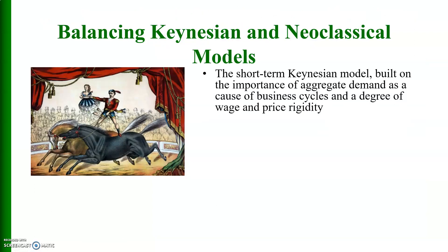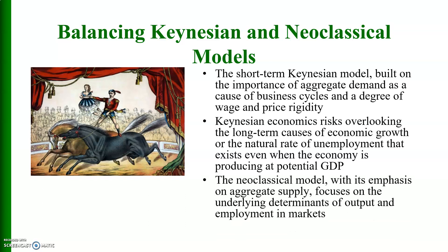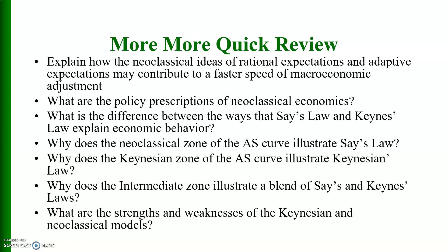Balancing Keynesian and new classical models: The short-term Keynesian model, built on the importance of aggregate demand, explains business cycles and wage and price rigidity, but risks overlooking the long-term causes of economic growth and the natural rate of unemployment that exists even when the economy is at potential GDP. The new classical model, with its emphasis on aggregate supply, focuses on the underlying determinants of output and employment in the market. There are quick review questions available to help compare the two analyses.